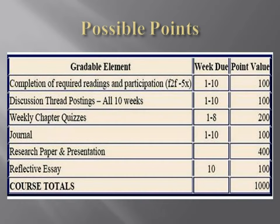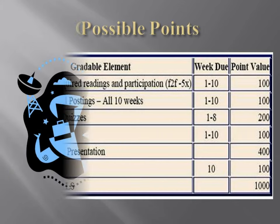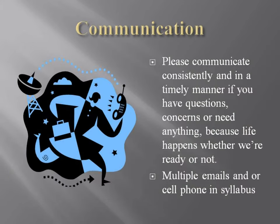There are a thousand possible points in the class. You get 20 points per week when we meet face-to-face for being involved, asking questions, and making comments — a hundred points total there. Discussion threads run all 10 weeks, including weeks 9 and 10, at 10 points apiece. There are eight 25-point chapter quizzes for 200 points. Journaling is 10 points a week, another hundred points. There are 350 points for the research paper and 50 for posting your draft on time. At the end of the course, there's a reflective essay — giving you a total of a thousand points.